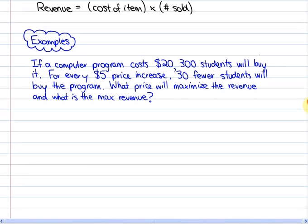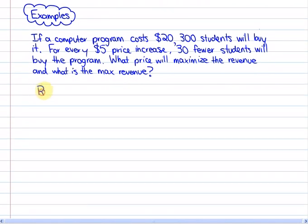We use the basic premise that revenue equals the cost of the item times the number sold. Also, what we don't know, or the variable, is going to be the number of price increases. So, we're going to represent in revenue problems the number of price increases or decreases. In this case, I'm going to let n equal the number of price increases.